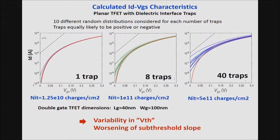With 40 traps present, there are considerable deviations from the ideal device: the subthreshold current is worsened and a variation in threshold voltage appears. These correspond to charge densities in the mid 10^11 per square centimeter — noting this is not exactly the same as DIT. The effect disappears if we are in the range of 10^10 charges per square centimeter.